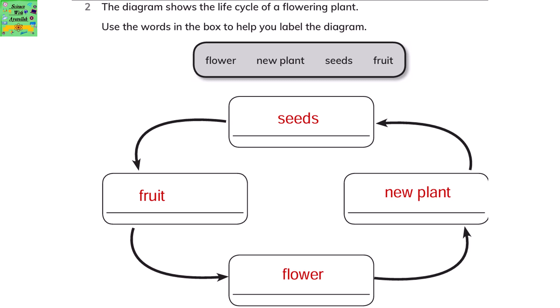The diagram shows the life cycle of a flowering plant. Use the words in the box to help you label the diagram. According to the life cycle, a seed forms a new plant, the new plant flowers, and each flower gives a fruit.